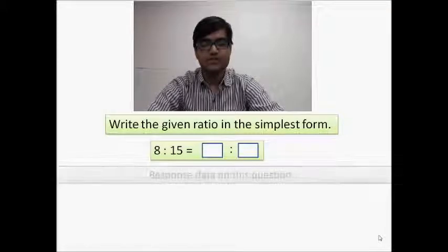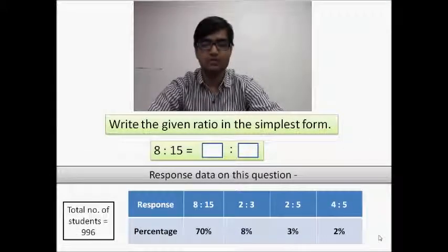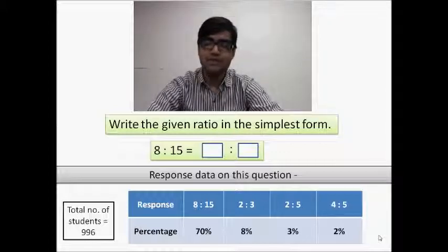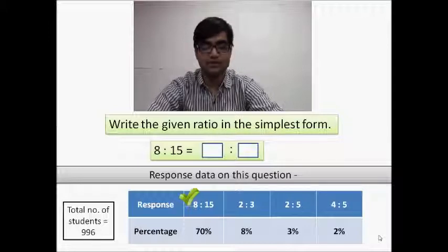The response data for this question shows us that out of 996 students of grades 6 and 7 who attempted this question, 70% got it right by realizing that 8 and 15 do not have a common factor by which they can be reduced.